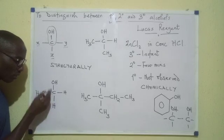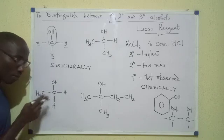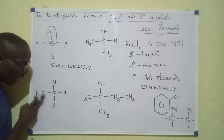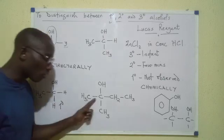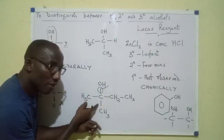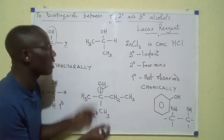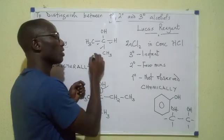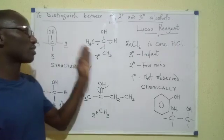Let's apply this to examples. For this first compound, the carbon bearing the OH has three remaining bonds to monitor — only one leads to a carbon atom, so this alcohol is primary. For the next compound, the carbon with the OH also has three remaining bonds, and two of them lead to carbon atoms, so this alcohol is secondary. That's how to identify primary, secondary, and tertiary alcohols structurally.